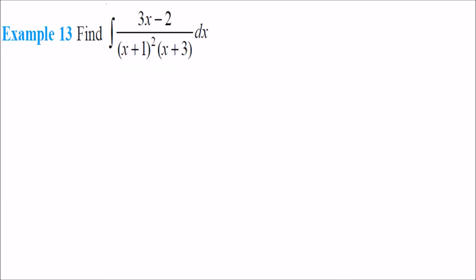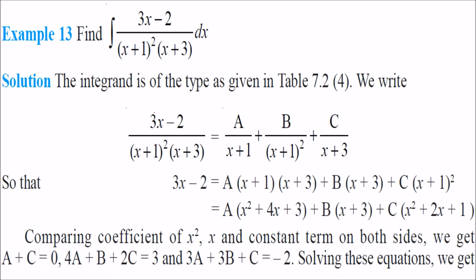For the next example involving a repeated factor, we write the expression as A/(x+1) + B/(x+1)² + C/(x+3). Taking the LCM: A goes with (x+1)² and (x+3), B goes with (x+1) and (x+3), and C goes with (x+1)². You then expand and collect the common terms.